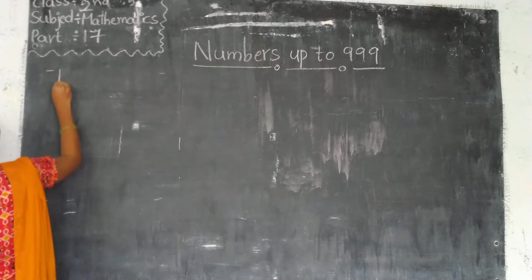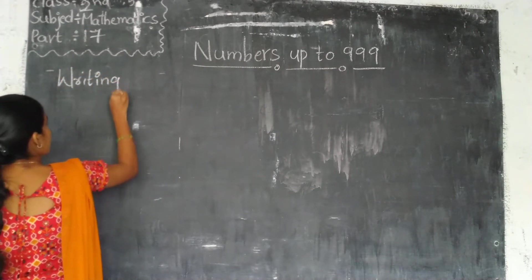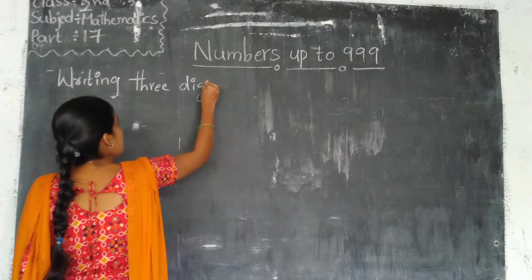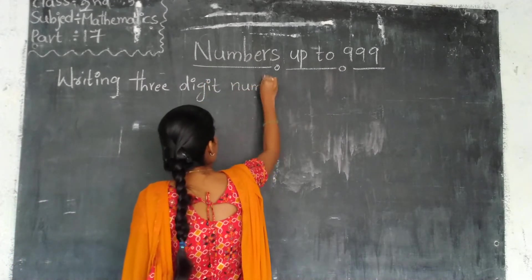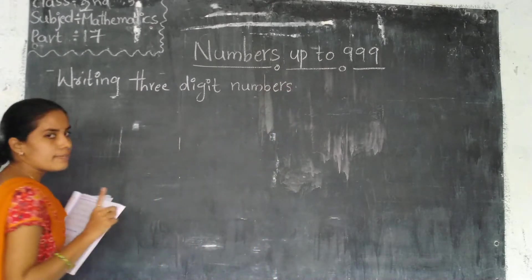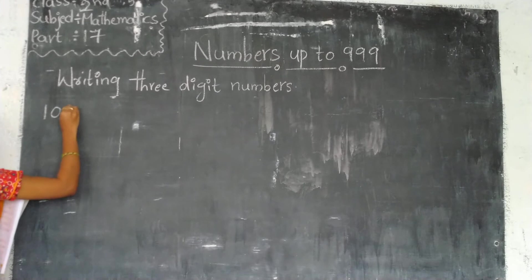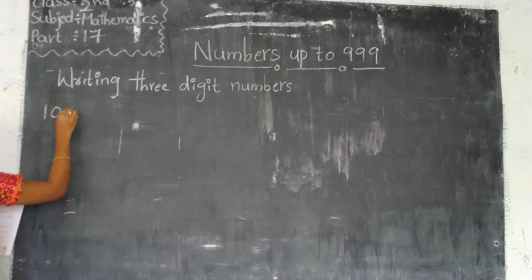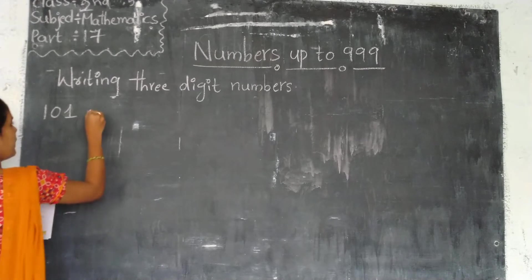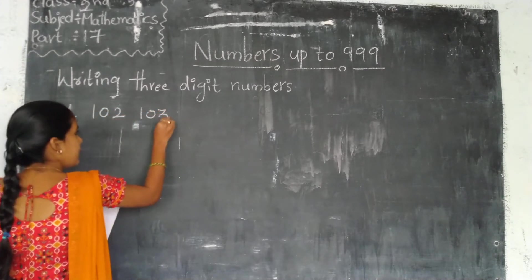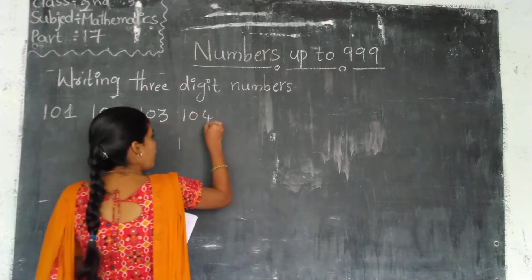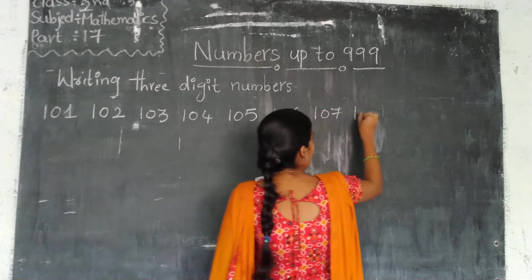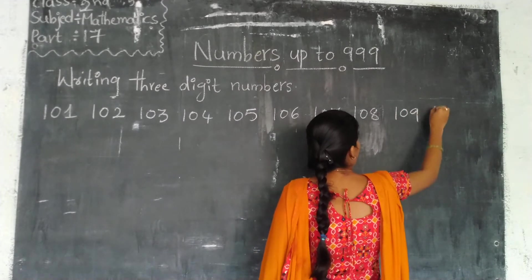How to write 3-digit numbers? Writing 3-digit numbers. The 3-digit numbers will start from 100. So how can you write? 100, and then 101, 102, 103, 104, 105, 106, 107, 108, 109, and 110.